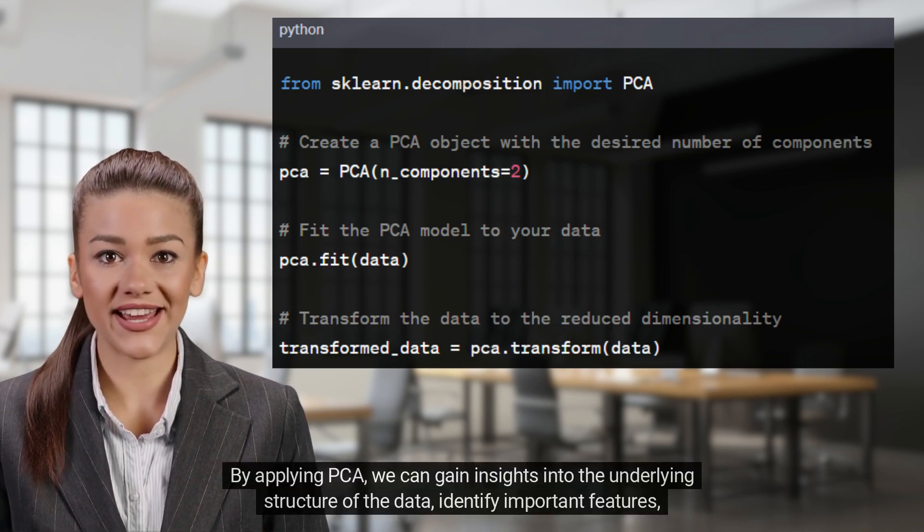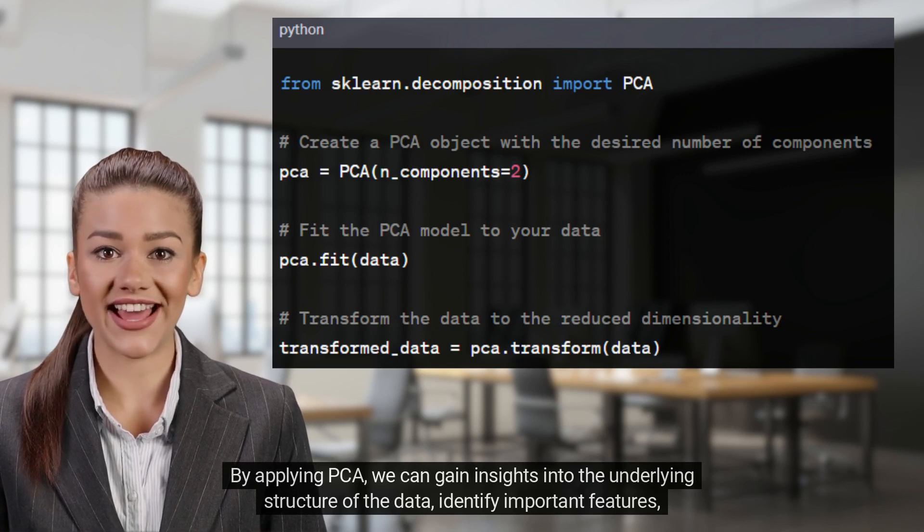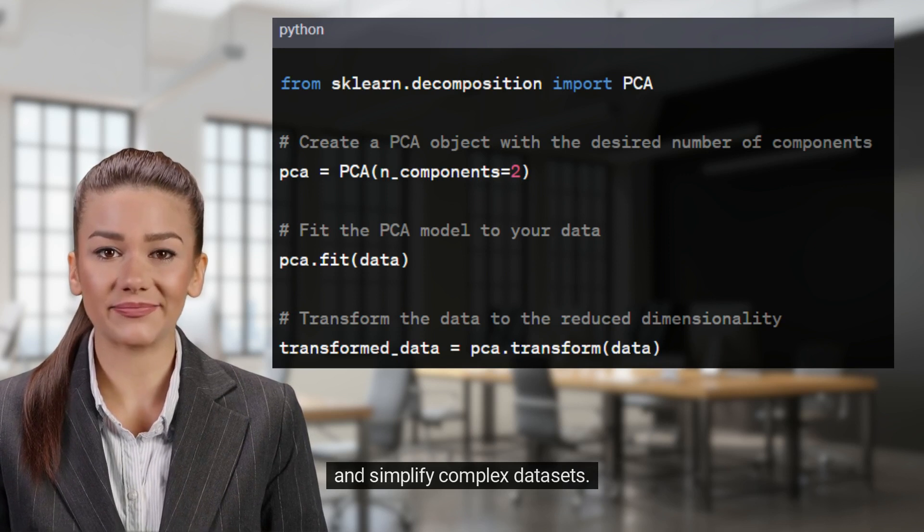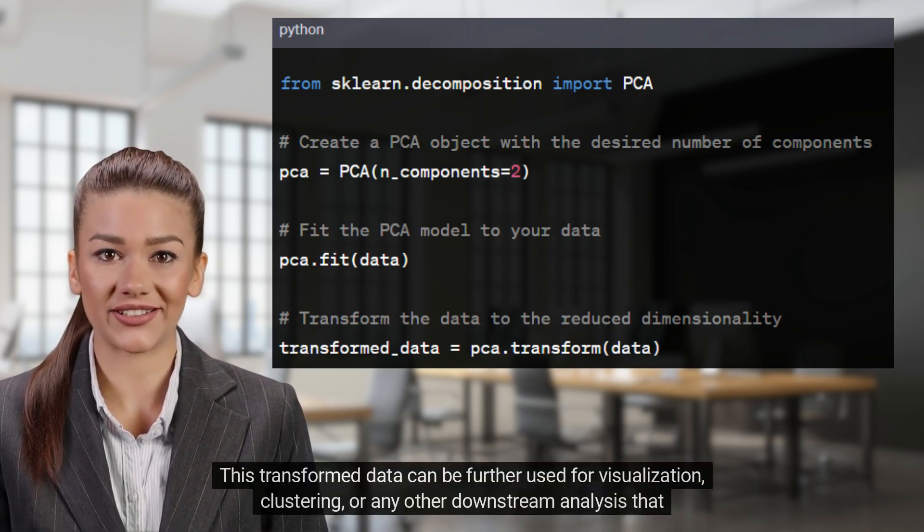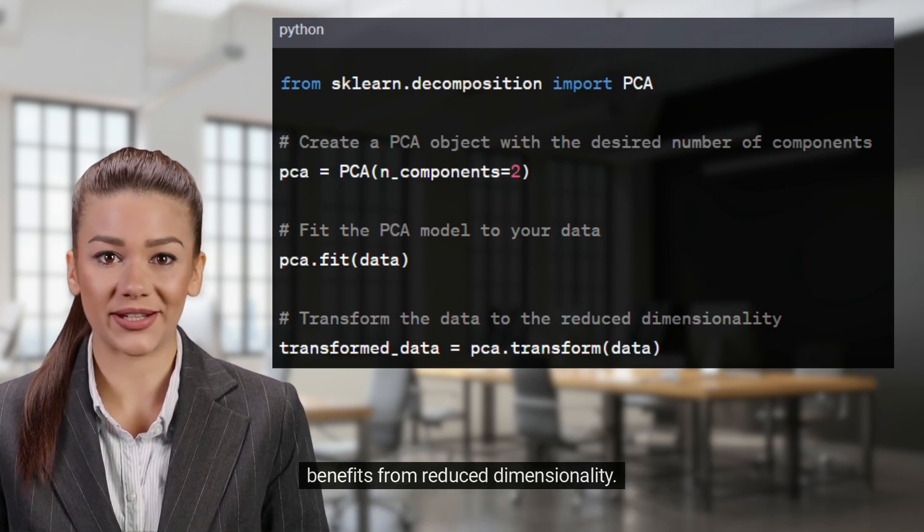By applying PCA, we can gain insights into the underlying structure of the data, identify important features, and simplify complex datasets. This transformed data can be further used for visualization, clustering, or any other downstream analysis that benefits from reduced dimensionality.